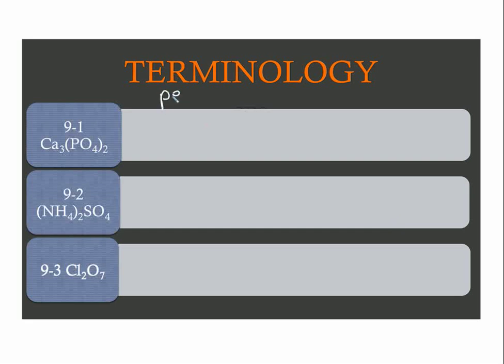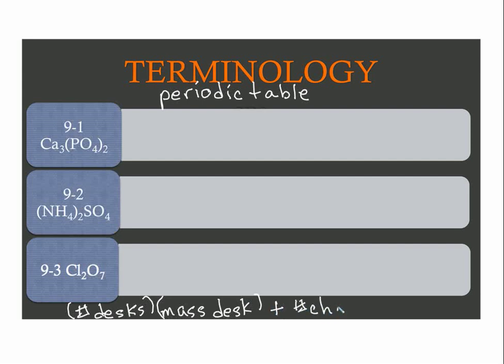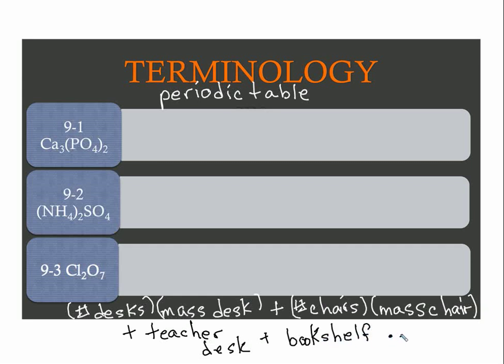Let's start talking about formula mass, molar mass, atomic mass, and how we calculate it. To calculate these, we're going to use the periodic table. In my room, if we were trying to find the mass of all items, we'd take the number of desks times the mass of a desk, then the number of chairs times the mass of each chair - this would find the total mass of the furniture. We might add the teacher desk, the bookshelf, file cabinets, and so on. We would add all that up - the mass of each times the number that are contributing.